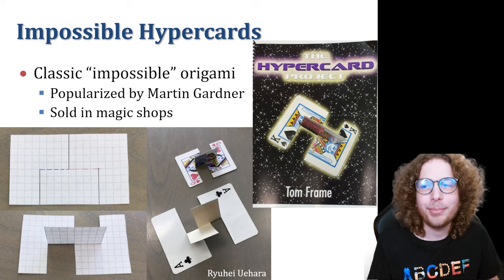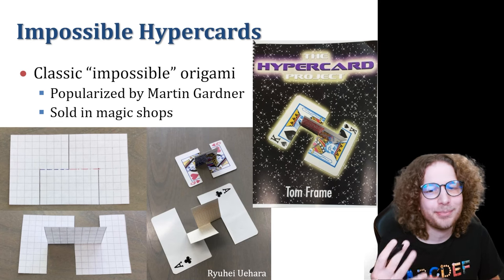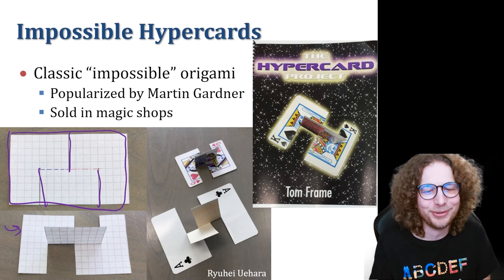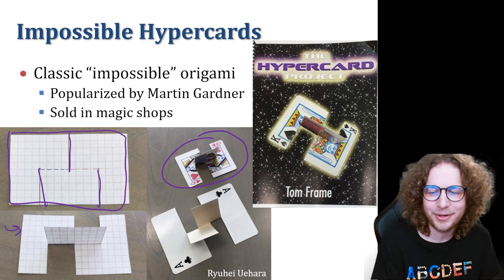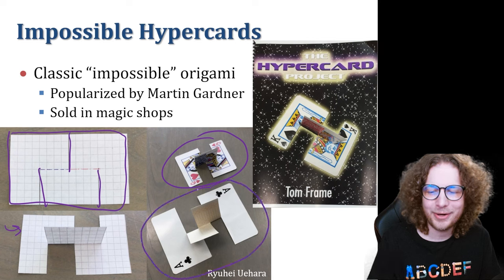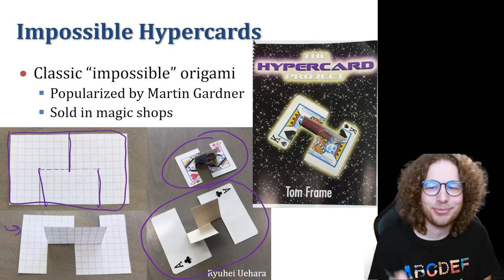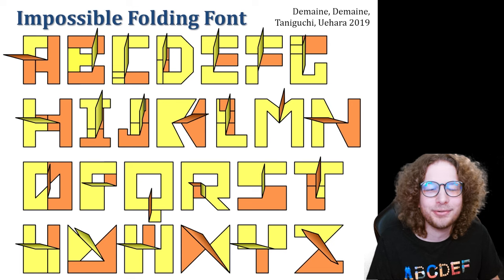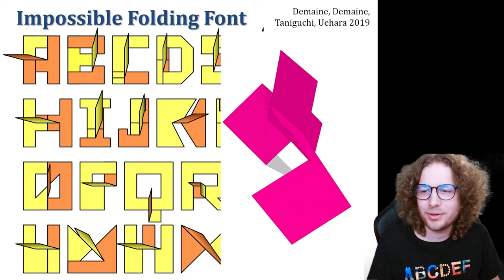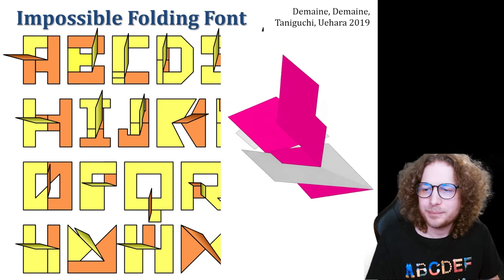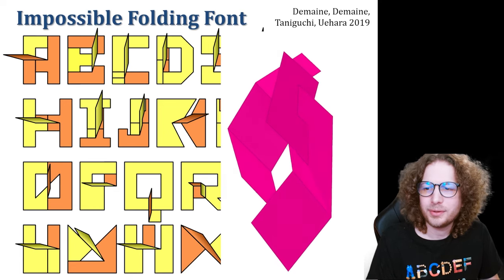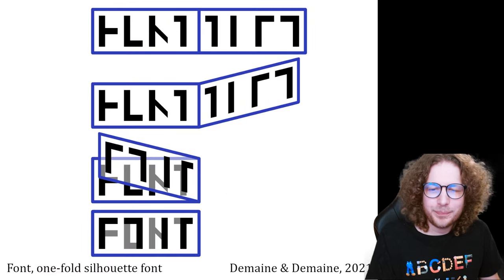Next are impossible hypercards — a type of impossible object and magic trick where you take a rectangle of paper, cut it, do some folding, and produce an object that looks like it can't have been made from a single sheet, but it can. Here's a variation by Aruhei Orahara that looks even crazier, with two flaps of paper coming out of a playing card — all just made from cutting and folding. We made a whole alphabet of impossible cards, and here is an animation of letter J folding.